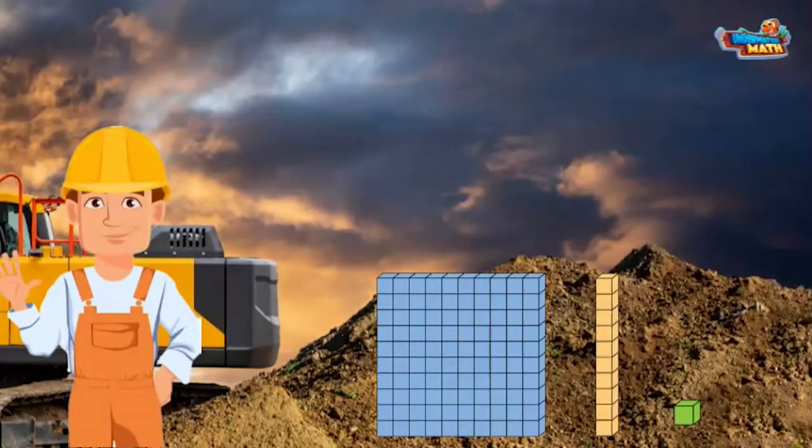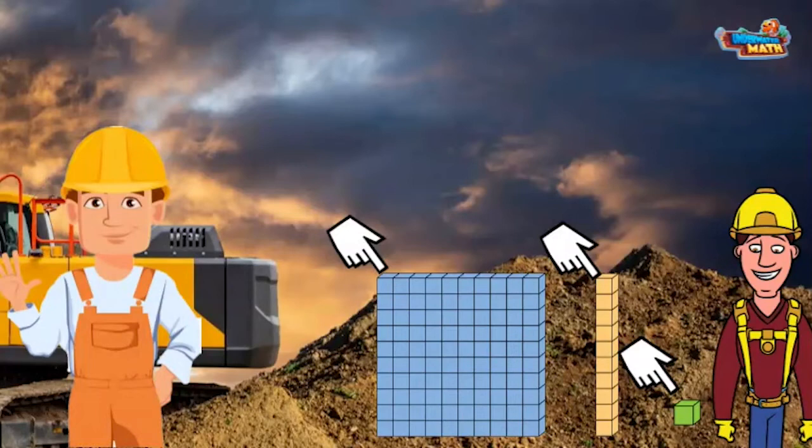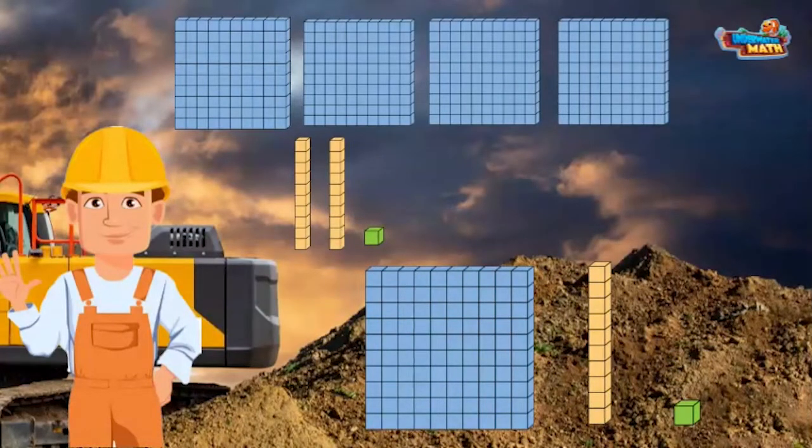I use different models. The first model is base 10 blocks. These flats are worth 100, the longs are worth 10, and the smaller cubes are worth 1. Bob, I need four flats, two longs, and one cube. Let me know what you come up with. Got it, Larry. We will count the flats by 100.